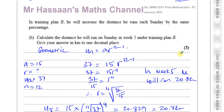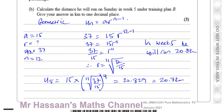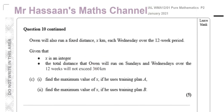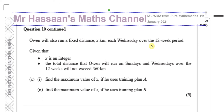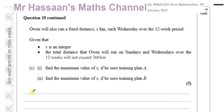That's the answer for parts A and B. Now for part C. Owen will also run a fixed distance X kilometres each Wednesday over the 12-week period. Given that X is an integer, the total distance he runs on Sundays and Wednesdays over 12 weeks must not exceed 360 kilometres. Find the maximum value of X for training plan A, then for plan B.